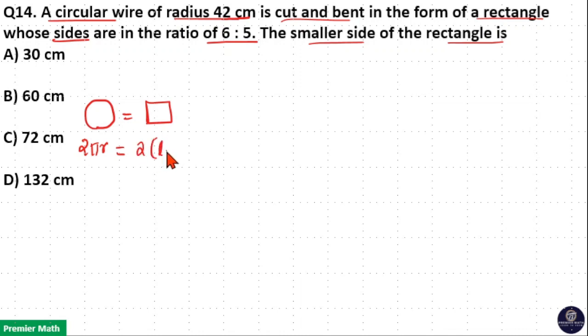So 2 into l plus b is equal to 2πr, which means 2 into 22 by 7 into r is 42 here. 42 is equal to 2 into l plus b.